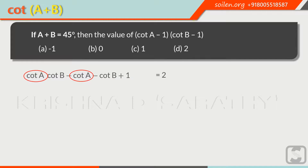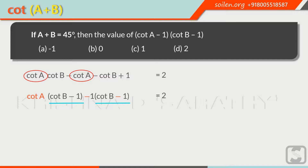Now we can write: cotangent a times bracket cotangent b minus 1. Next, we have taken out minus 1 common, so it will change signs of the last two terms. Now we can write cotangent b minus 1 equal to 2. Again, we have cotangent b minus 1 common in both groups. Take it out common, and finally we get the given expression: cotangent of a minus 1 times cotangent of b minus 1 equals 2. So the correct answer is option D, 2.